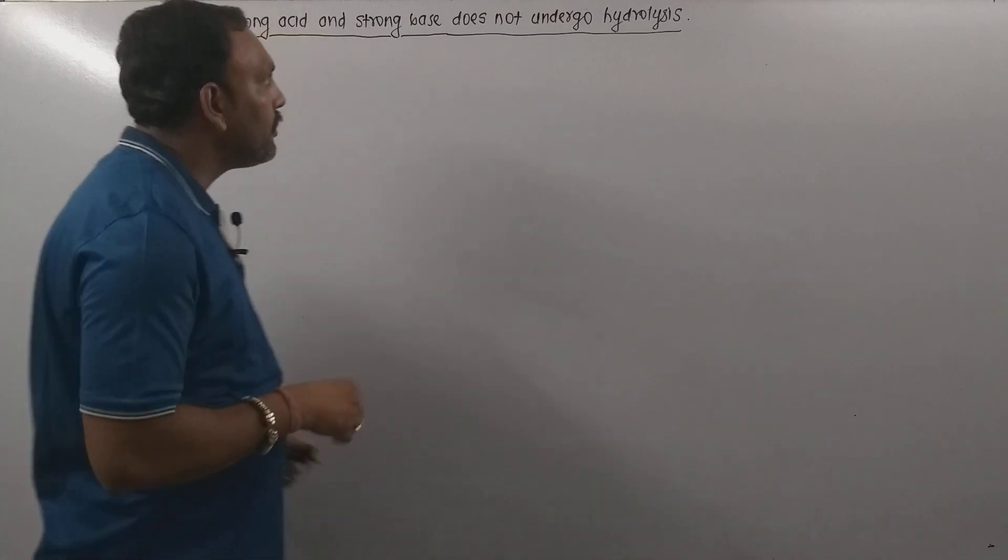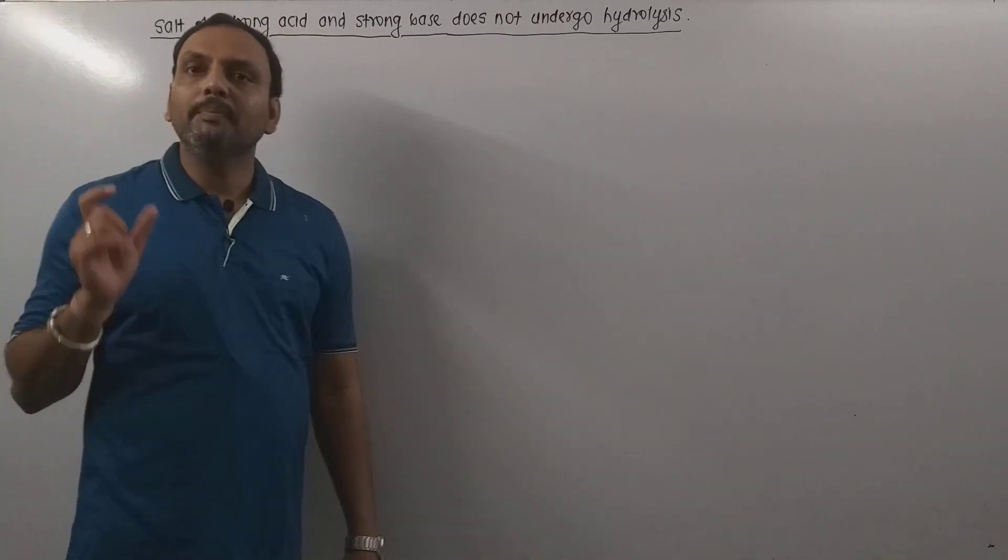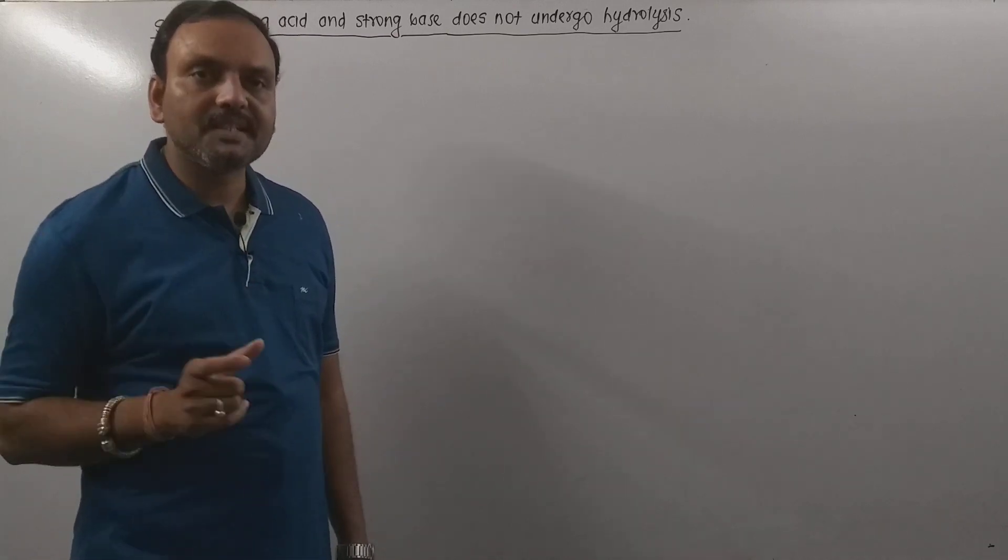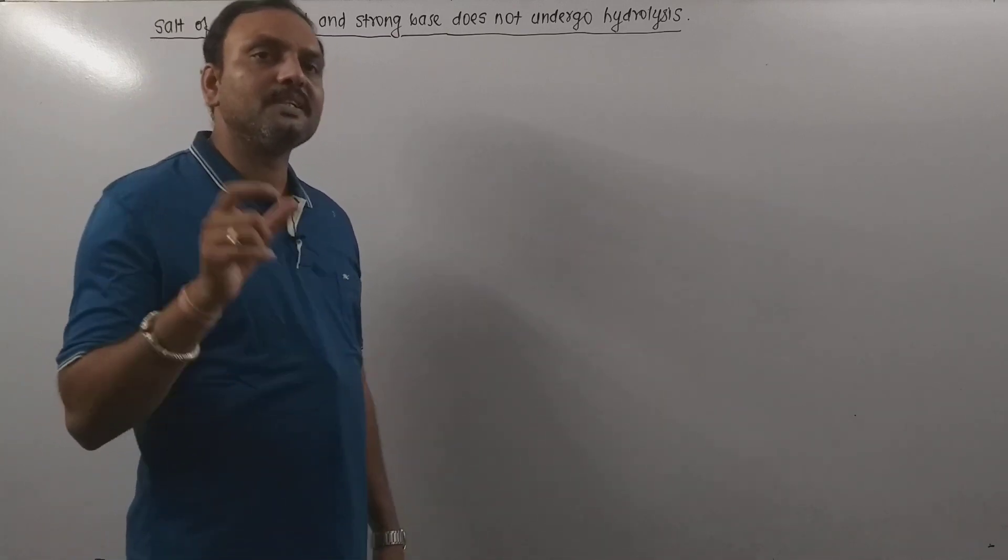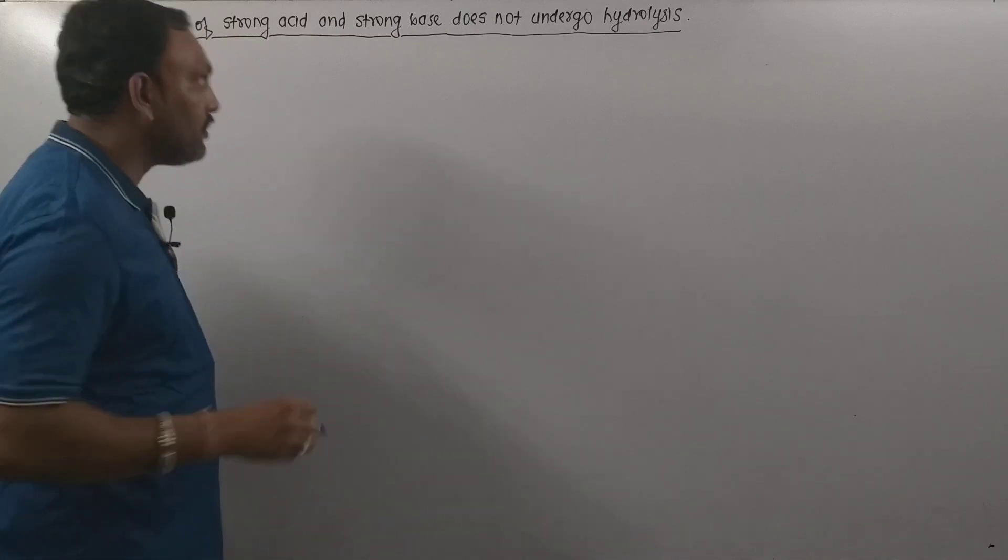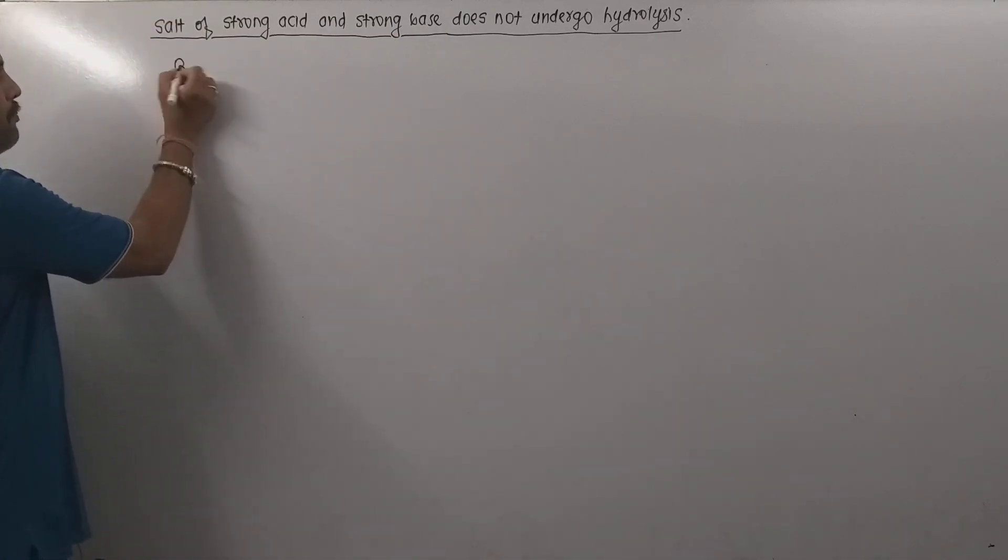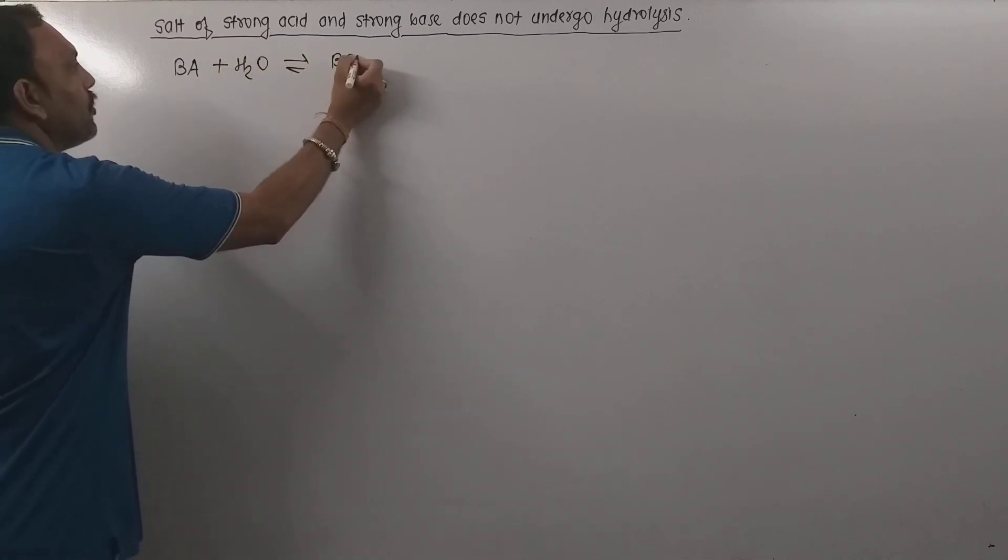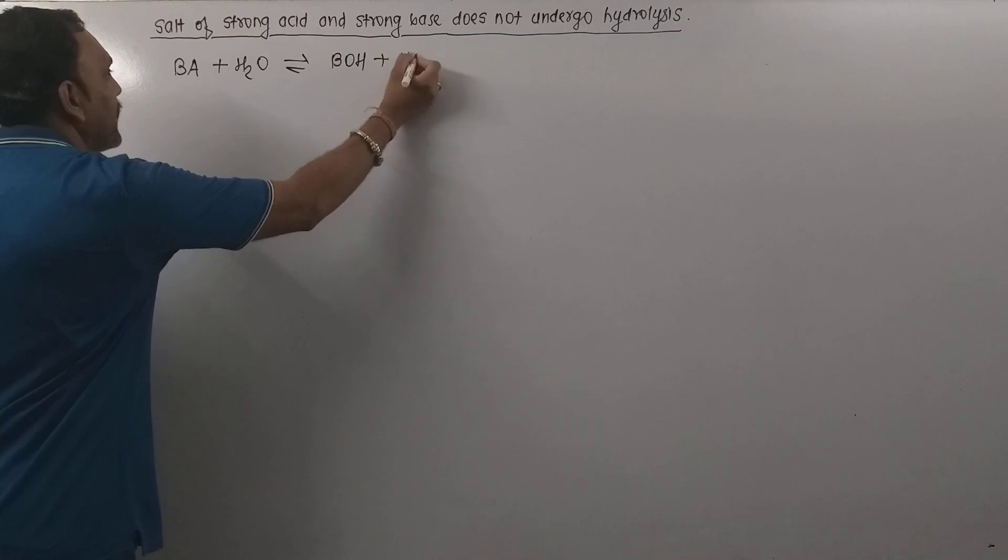Consider salt BA. BA is supposed to be a salt of strong acid HA and strong base BOH. When this salt, I mean BA, is dissolved in water, it is expected to show this type of reaction.